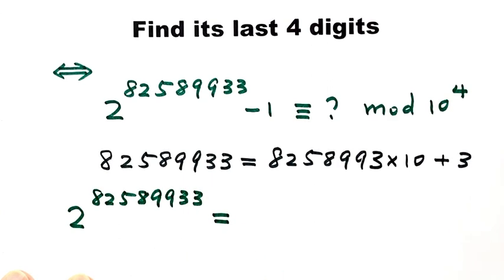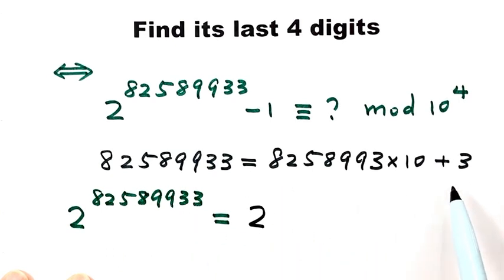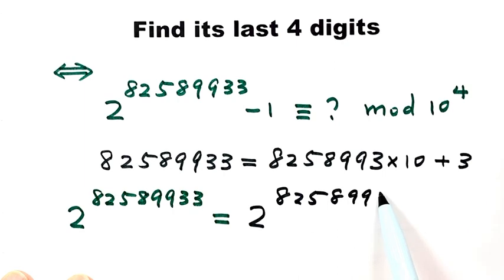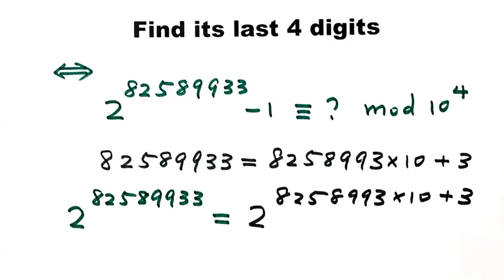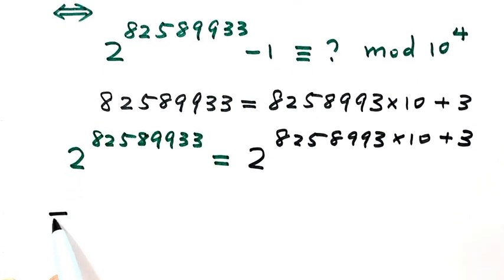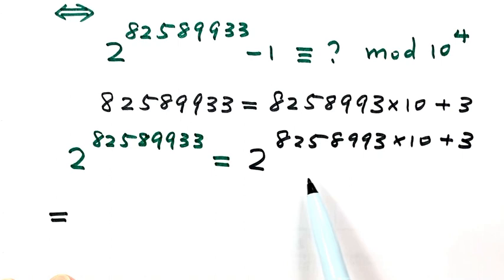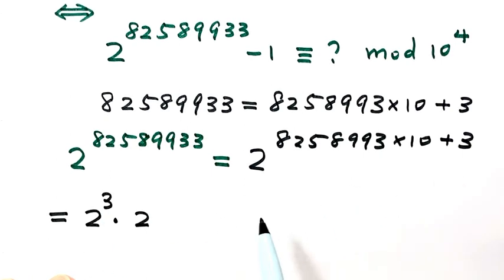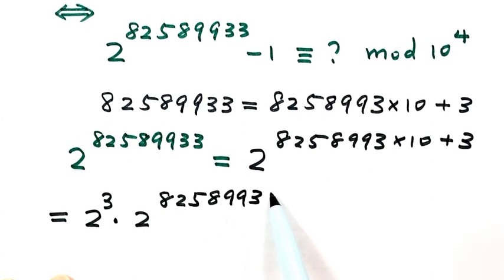Now let's use this decomposition to replace the exponent. So 2 to the power of 82,589,933 equals 2 to the power of (82,589,930 times 10 plus 3). This means 2 to the third times 2 to the power of 82,589,930, which gives us 8 times 2 to that part.